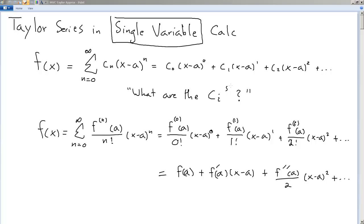The question in calc 1 was, what are the constants? What are the c_i's? As it turns out, they are the nth derivative of the function evaluated at a divided by n factorial. That's all they are.